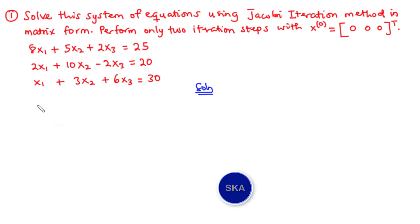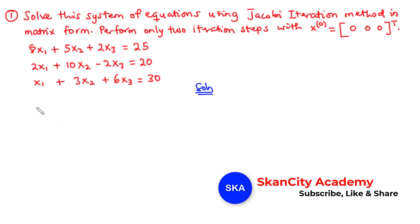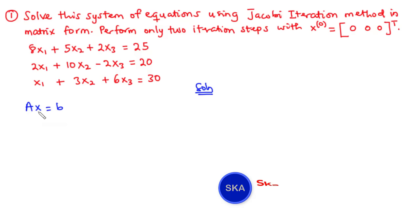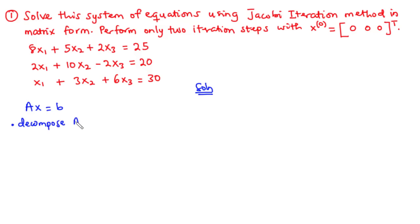First of all, we need to consider a 3x3 system written in the form Ax equals b, where A is the coefficient matrix, x contains the unknown variables x1, x2, x3, and b represents the constant matrix. We need to decompose the coefficient matrix A so that A equals L plus D plus U, where D is the diagonal matrix containing the diagonal elements of A, L is the lower triangular matrix containing elements strictly below the main diagonal, and U is the upper triangular matrix containing elements strictly above the main diagonal.